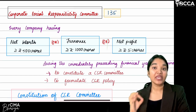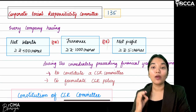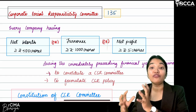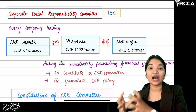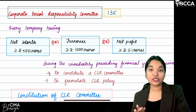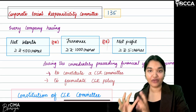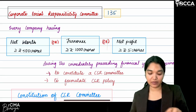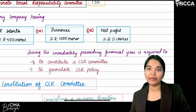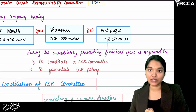Every company must satisfy at least one of three limits during the immediately preceding financial year. The first limit is net worth — more than or equal to ₹500 crores. Or the company can satisfy the turnover limit — more than or equal to ₹1000 crores. Or it can satisfy the net profit limit — more than or equal to ₹5 crore rupees.